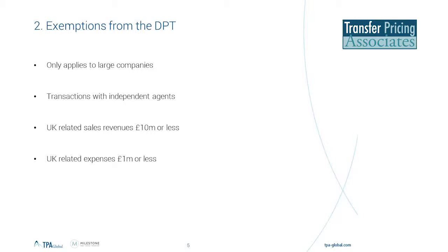Even if you do have sales revenue over 10 million, you can still potentially escape the charge if your UK-related expenses are 1 million or less — so we're talking about salaries, overhead, etc. For the remainder of the slides, we will assume that none of these exemptions are available.